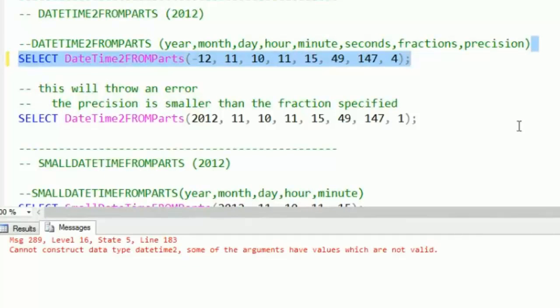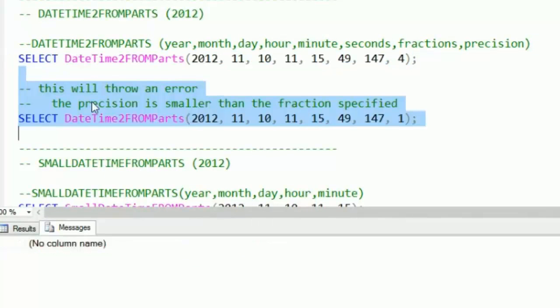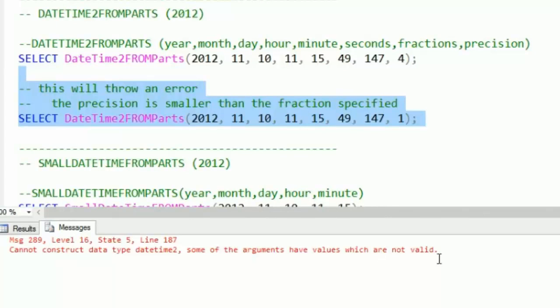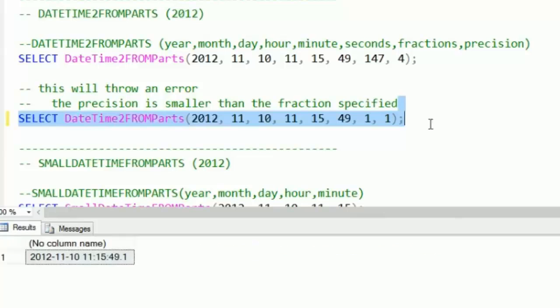Here's an interesting one where we're going to get another error here. When we run this, we get some of the arguments have values which aren't valid. The reason is because we're passing in 147 milliseconds with one digit of precision. That one digit of precision is going to take up less space when it's stored, but you can't put a 147 into it. So if we make that a little bit smaller and give it one millisecond, that works, but it's not really one millisecond at that point. It's one tenth of a second. If we want to go back to the 147 as number of milliseconds, we have to have at least three digits of precision here.